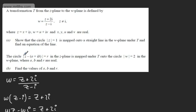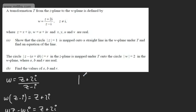We're now told the circle mod(z minus (a plus ib)) equals r in the z-plane is mapped under t onto the circle mod w equals 2 in the w-plane, where a, b, and r are real. We need to find the values of a, b, and r. The approach I'm going to take is to substitute w in: writing the modulus of (z plus 2i) divided by (z minus i) equals 2.